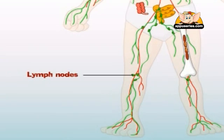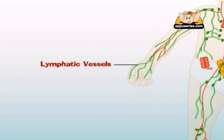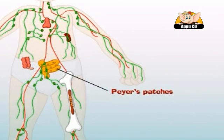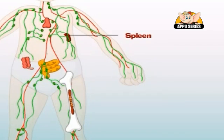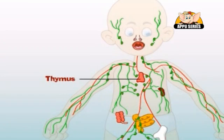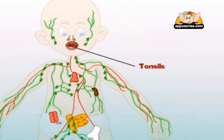Lymphatic vessels, network of channels throughout the body that carries lymphocytes to the lymphoid organs and the bloodstream; Peyer's patches, lymphoid tissue in the small intestine; spleen, a fist-size organ located in the abdominal cavity; thymus, two lobes that join in front of the trachea behind the breastbone; tonsils, two oval masses in the back of the throat.